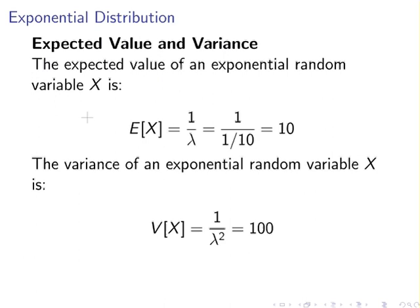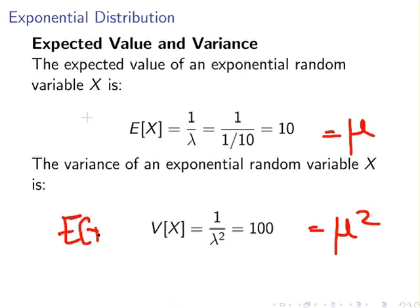Finally, the expected value and variance. The expected value E[X] = 1 divided by (1/10) = 10 minutes. The variance V[X] = mu squared = 10 squared = 100 minutes squared. So the expected call duration is 10 minutes with a standard deviation of 10 minutes. That ends the presentation.